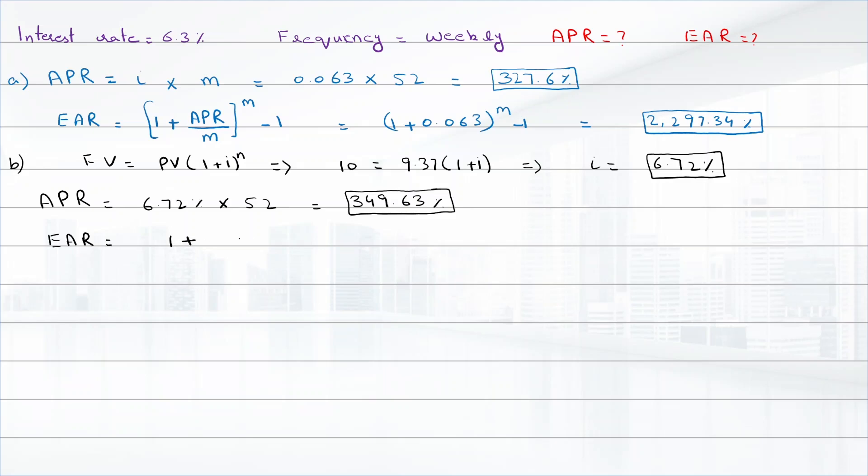And the EAR is (1 + 0.0672)^52 - 1, that will be equal to 2848.09 percent.